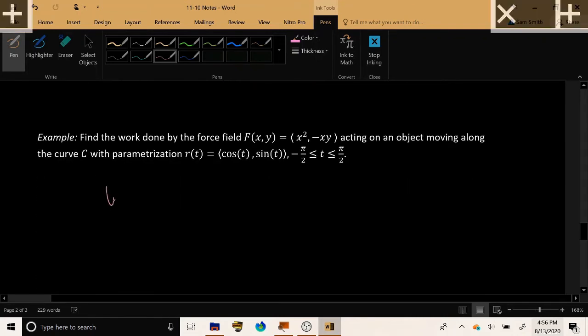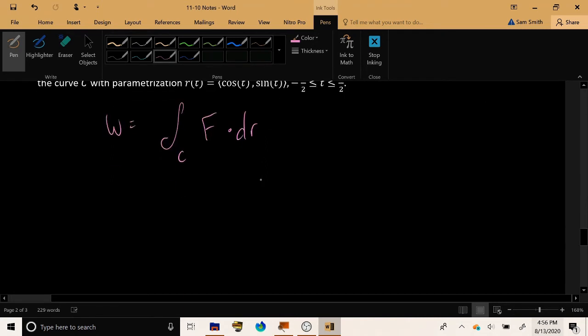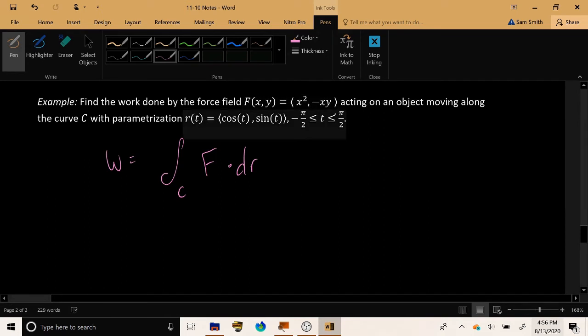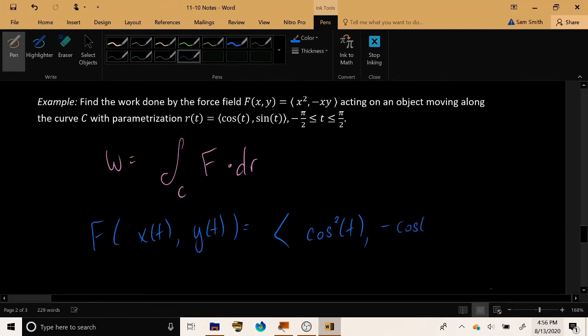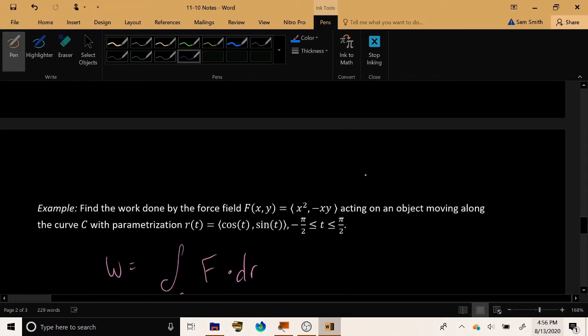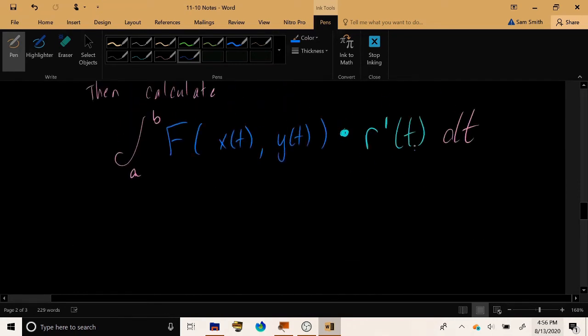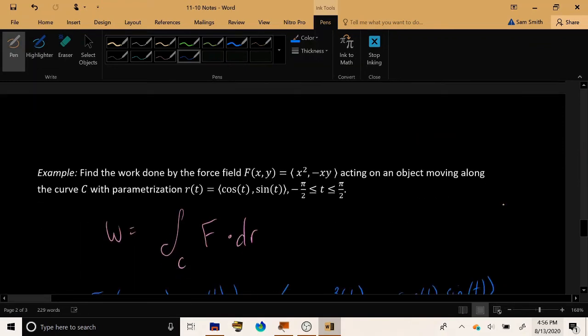So let's calculate the work done, which is the line integral over C of the vector field F. So we have our force field, which is F(x,y), which means that F of the x of the parameterization, F of the y of the parameterization will not be x², but will be cos²t. Will not be -xy, but will be -cos t sin t. Next, the next component in the integrand is the velocity vector for the parameterization. It's R'. No magnitude, just R'. So taking the derivative component-wise of R(t), we have R'(t), cosine becomes -sin, and sine becomes cosine.